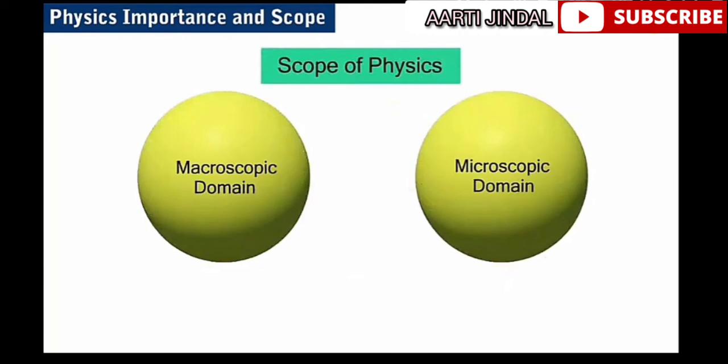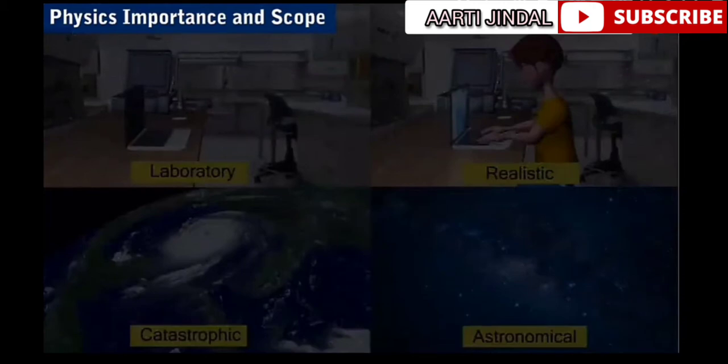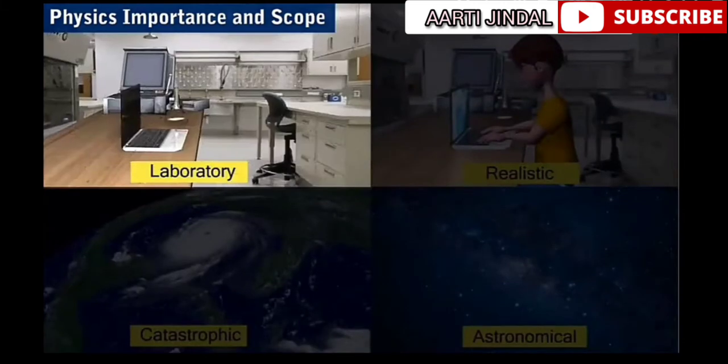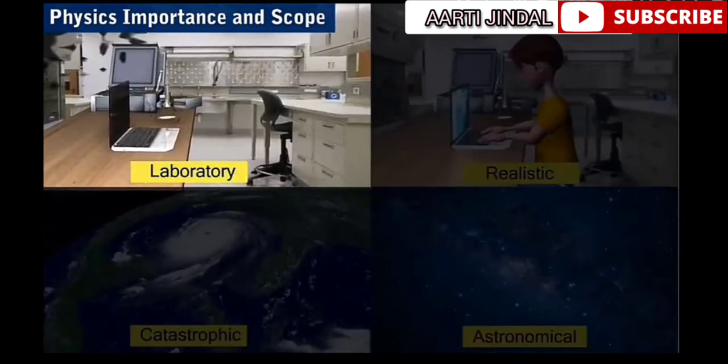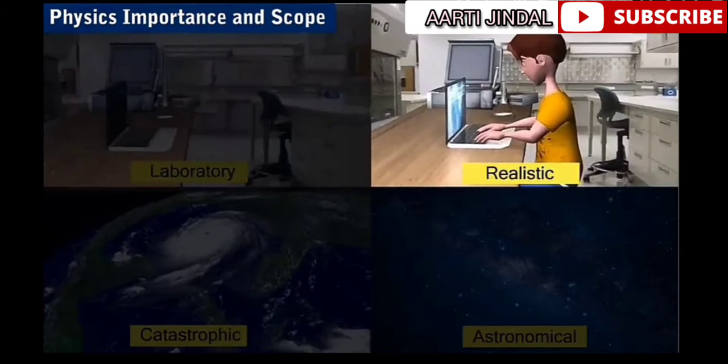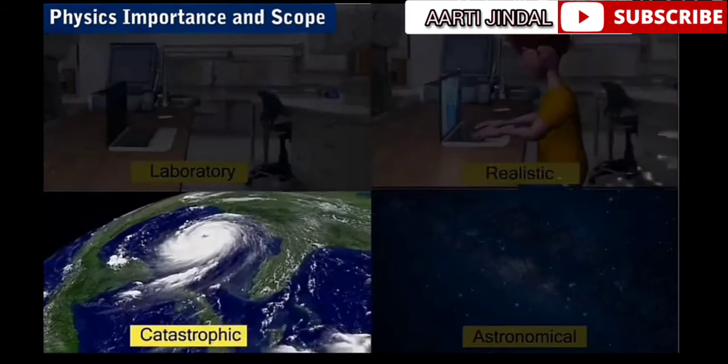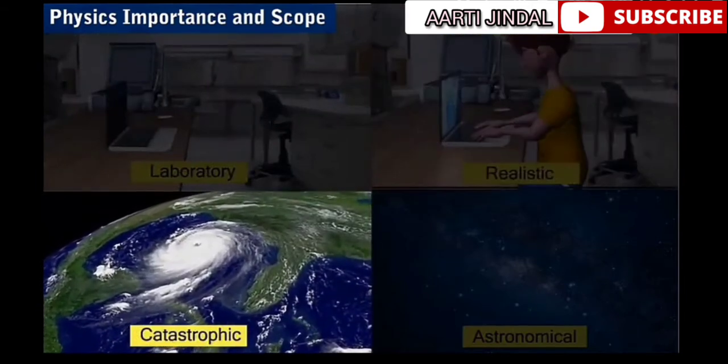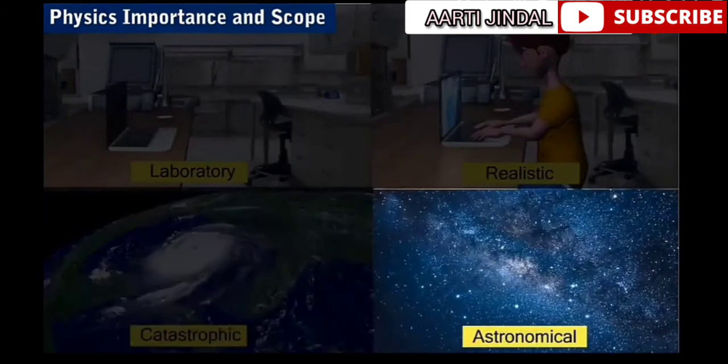The scope of physics can be divided into two major domains: macroscopic and microscopic. The macroscopic domain deals with phenomena at laboratory, terrestrial, catastrophic, and astronomical scales.